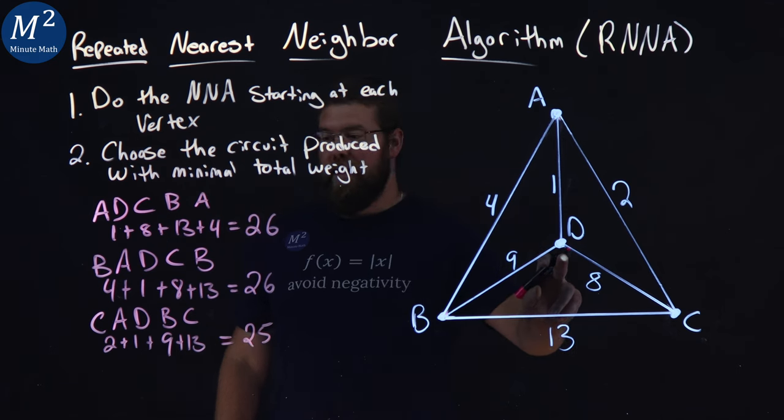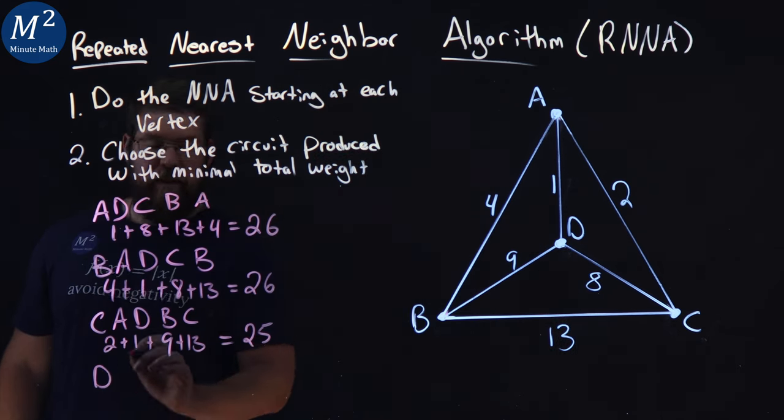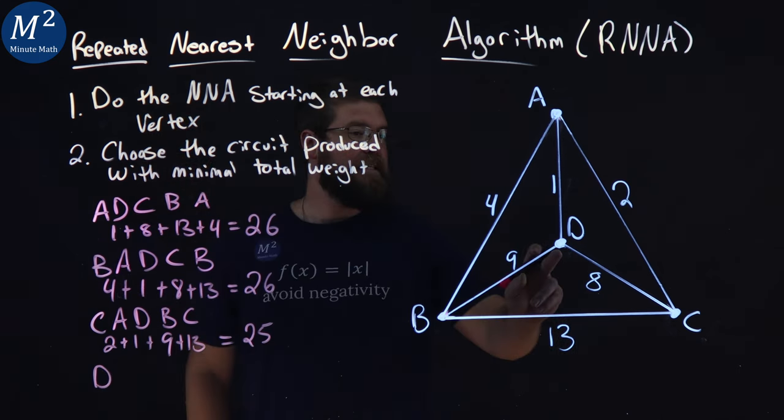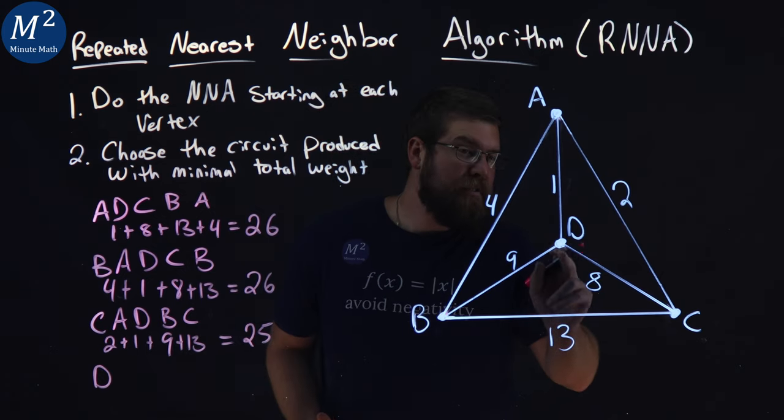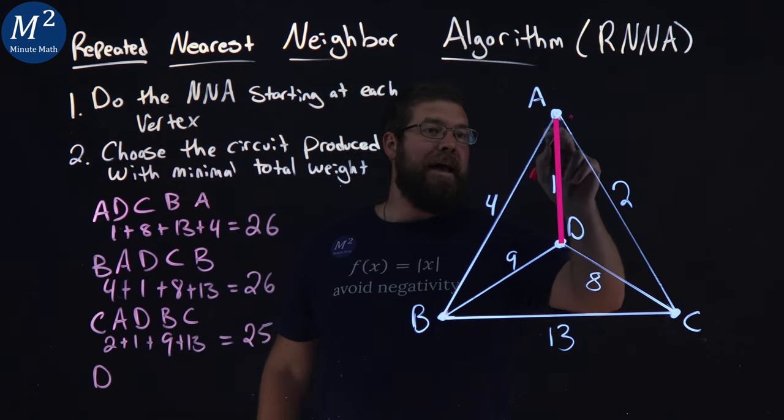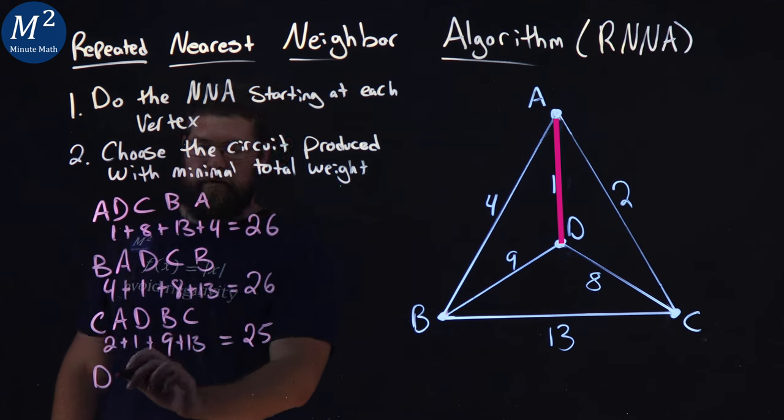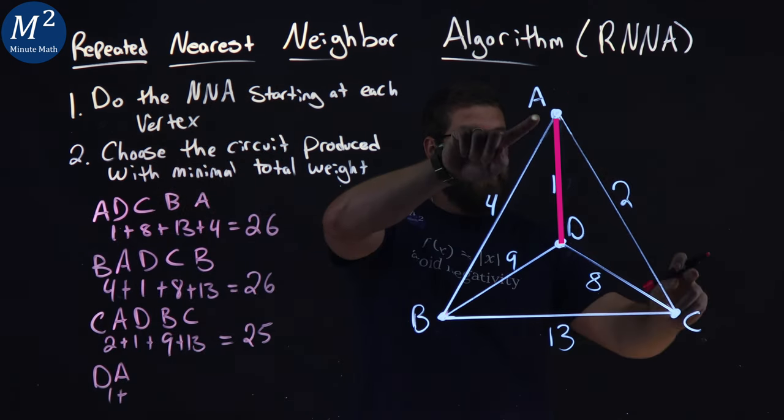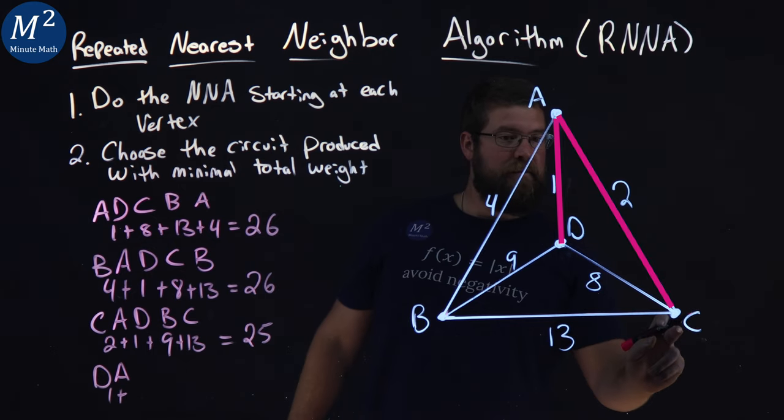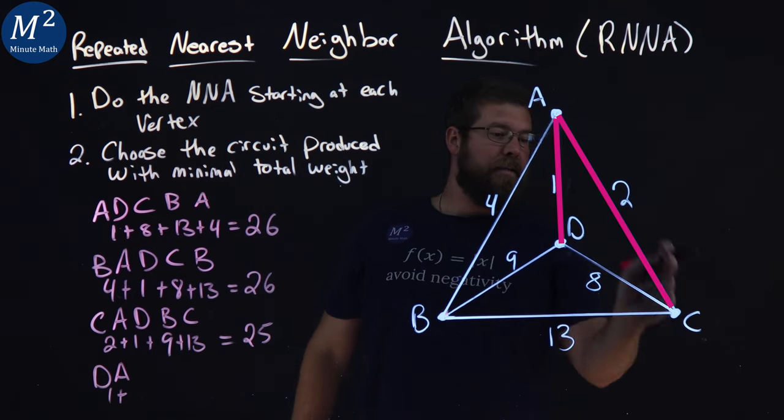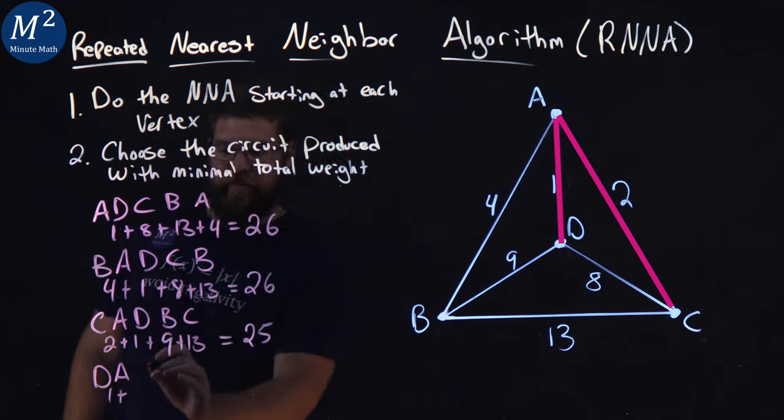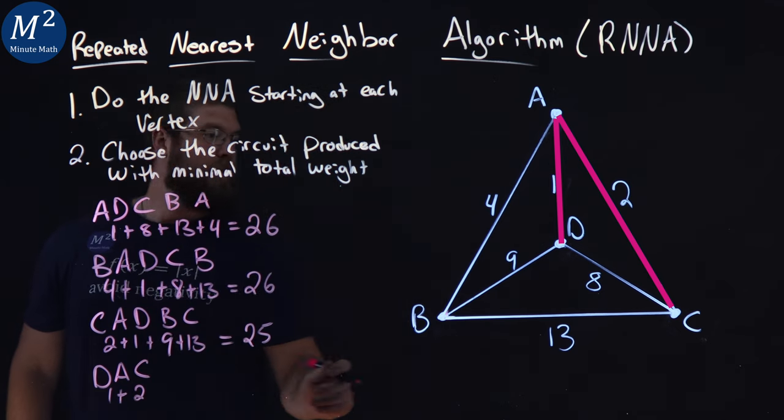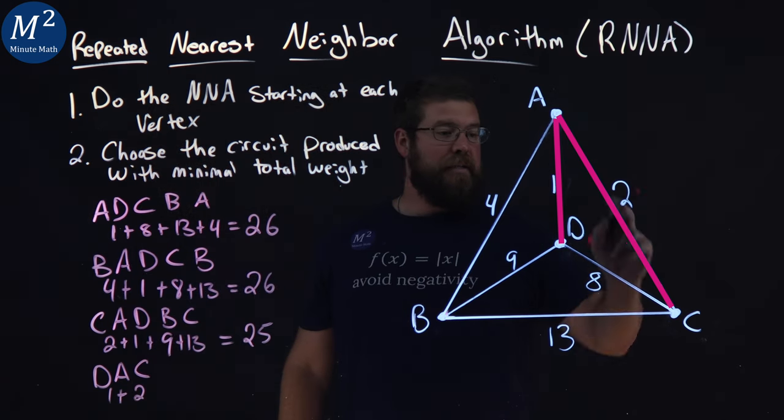Lastly, let's apply starting at D. And then we'll see which one was the lowest. So D here, smallest weight, lowest weight would be going to A, nearest neighbor. That has a weight of 1. Then from A, the nearest neighbor we have unvisited would be C, right here. So A to C is a weight of 2. So we went from D to A to C.